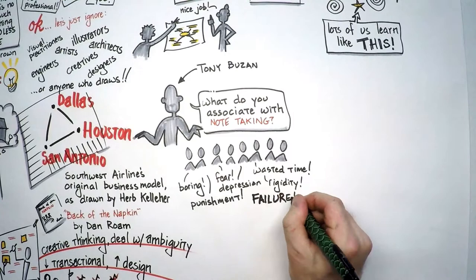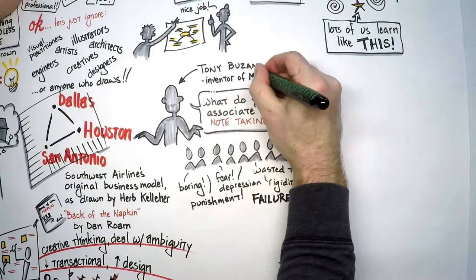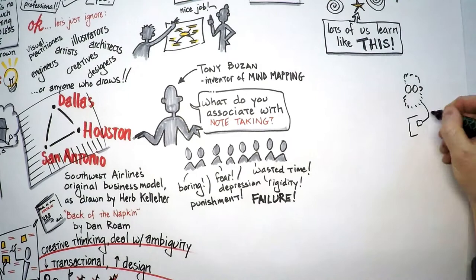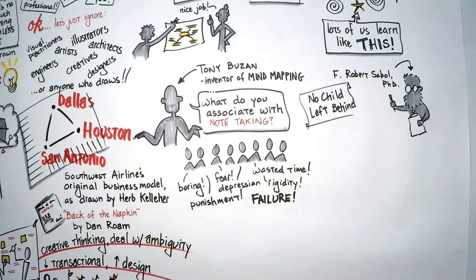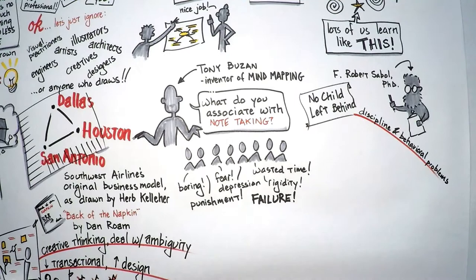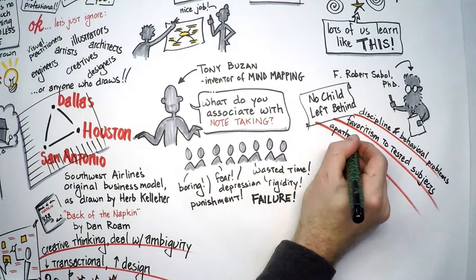Buzan went on to create a new style of note-taking that he called mind mapping. The other study I want to share is a bit more recent. Dr. F. Robert Sabol of Purdue University looked at some of the effects of No Child Left Behind. You can probably guess some of the findings: that the emphasis is on finding the simplest answers, that there are higher incidents of discipline and behavioral problems, that there is favoritism towards tested subjects, that there is growing apathy and resentment and decreased work ethic, and that there is low morale and low idealism of teachers.